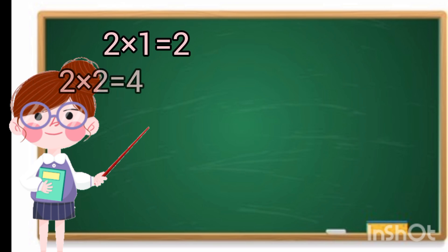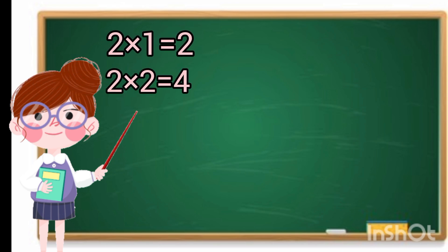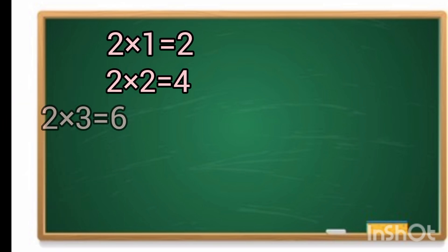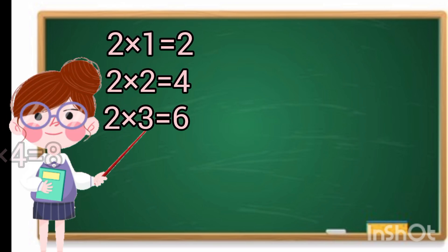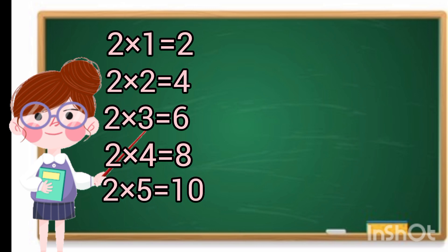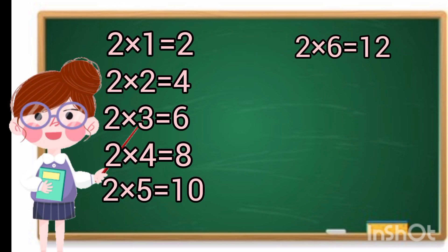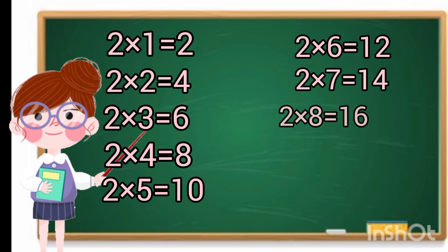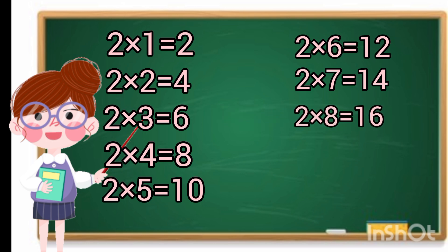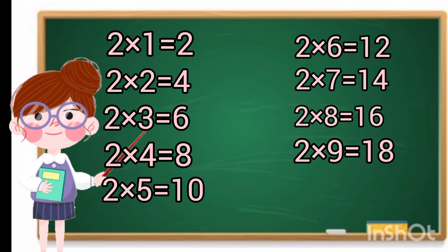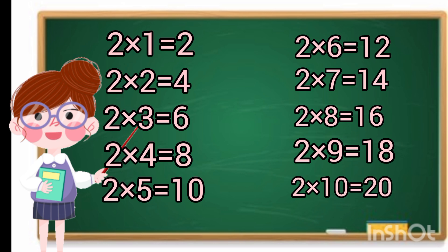2, 1's a 2. 2, 2's a 4. 2, 3's a 6. 2, 4's a 8. 2, 5's a 10. 2, 6's a 12. 2, 7's a 14. 2, 8's a 16. 2, 9's a 18. 2, 10's a 20.